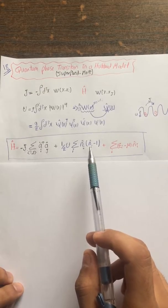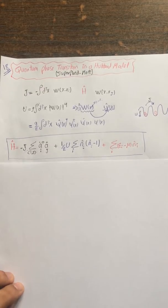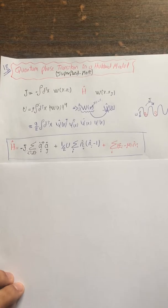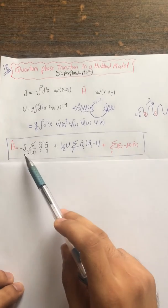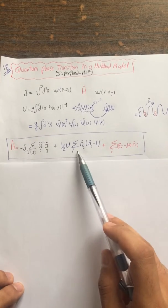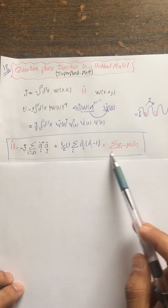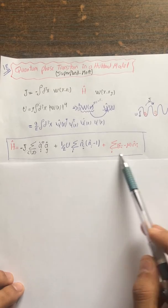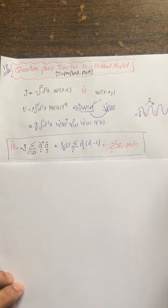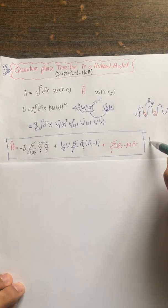If you have one particle, you don't have this interaction term. So now we have the tunneling term, the on-site interaction, and another term for the chemical potential. This is the whole Hamiltonian — it is a very simple Hamiltonian and we call it the Bose-Hubbard Hamiltonian.